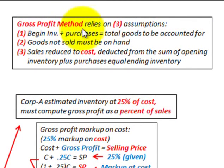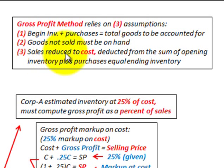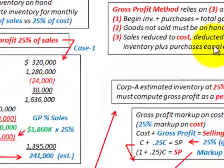The gross profit method relies on three assumptions: number one, beginning inventory plus purchases equals total goods to be accounted for; two, goods not sold must be on hand; and three, sales are reduced to cost — they're deducted from the sum of opening inventory plus purchases to equal ending inventory.